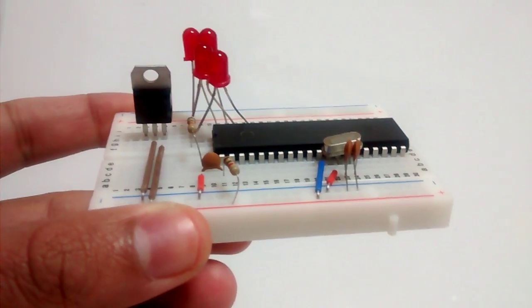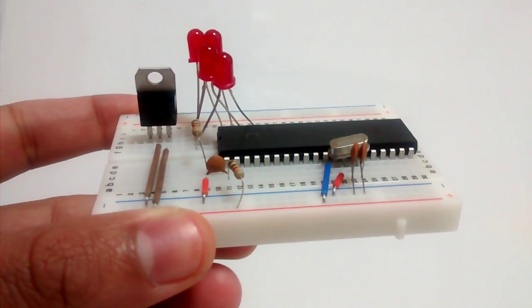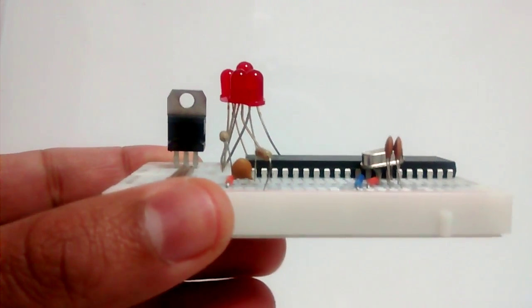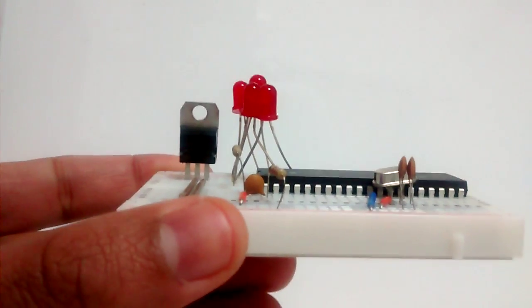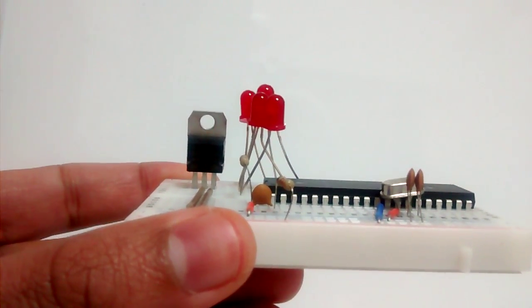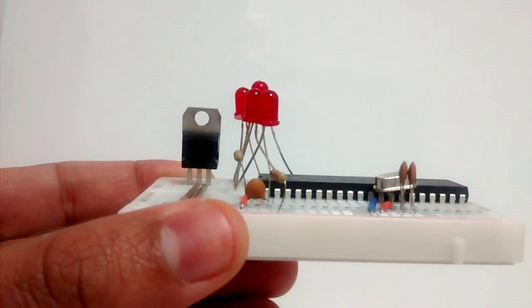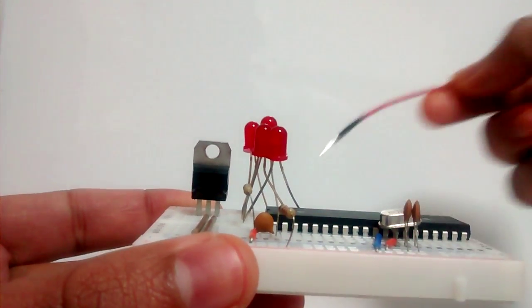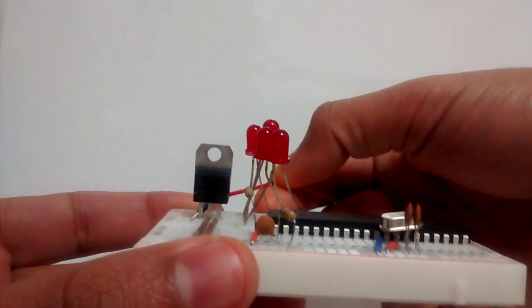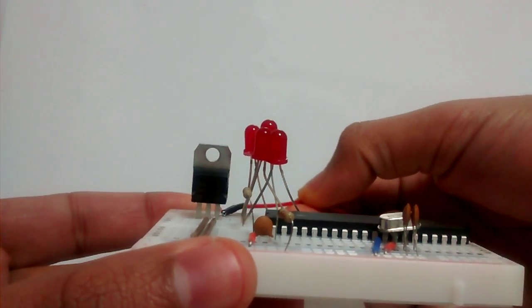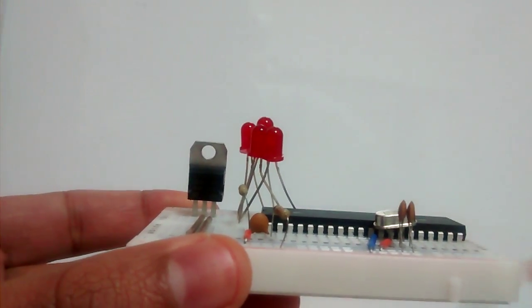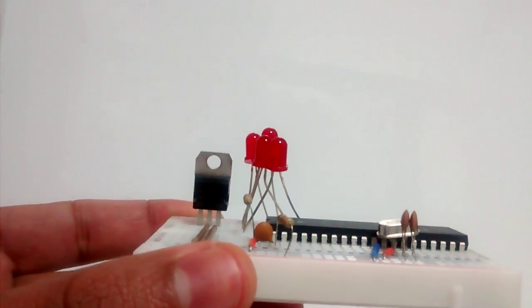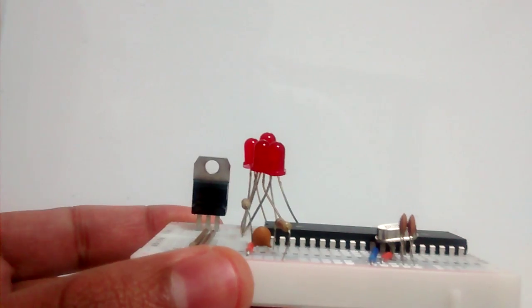The 3-pin IC on the left side is the 7805 voltage regulator. Pin 1, which is on the extreme left, is the input voltage pin where you can connect up to 12 volts. The second pin in the middle is the ground pin, and the third pin is Vout, which outputs 5 volts.